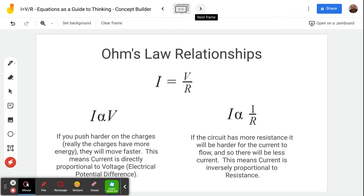If we look at the relationships in this equation, we see V up here in the numerator. That gives a directly proportional relationship, meaning if I gets bigger, V gets bigger. In other words, if you push harder on the charges in a circuit, and really the charges have more energy, V means they have more energy. I just like to think of it as how hard they're being pushed. When they're pushed harder, they're going to move faster. And this means that the current is directly proportional to the voltage. Bigger voltage, bigger current. Smaller voltage, smaller current.